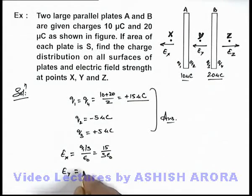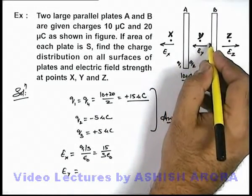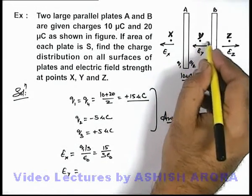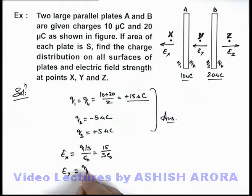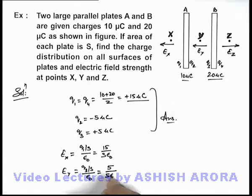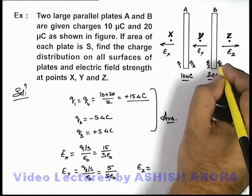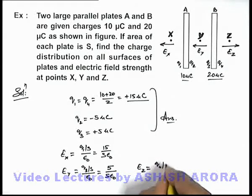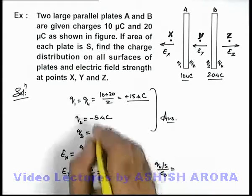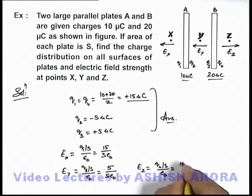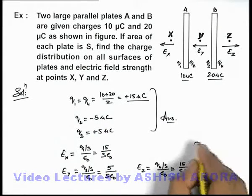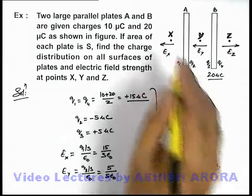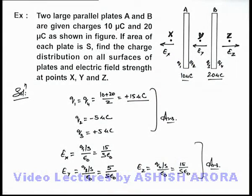The electric field at point Y can be given using the face of plate B which is in front of point Y, carrying charge Q3. So it can be written as Q3 / S divided by epsilon naught, giving 5 / (S·ε₀). Similarly, Ez is in front of the charge face carrying Q4, so it will be Q4 / S divided by epsilon naught. As Q4 is 15 micro coulomb, Ez = 15 / (S·ε₀). So these are the electric fields at points X, Y, and Z due to the charge distribution on the 2 plates.